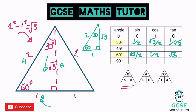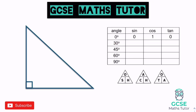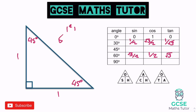Now let's look at 45 degrees and 90 degrees. For this we use a unit isosceles right-angled triangle where both shorter sides are 1, so both base angles are 45 degrees. Using Pythagoras, the hypotenuse is the square root of 1 squared plus 1 squared, which is root 2. So just knowing a bit of Pythagoras, we can label this triangle up quite nicely.